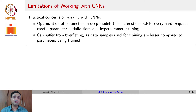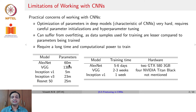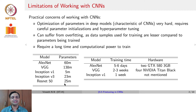Secondly, CNNs can suffer from overfitting because the data samples used for training are generally much fewer in number than the parameters being trained. AlexNet has 60 million parameters, VGG has 138 million, Inception v1 had 5 million parameters, an improved version called Inception v3 had 23 million parameters, and ResNet 50 had 25 million parameters and so on.